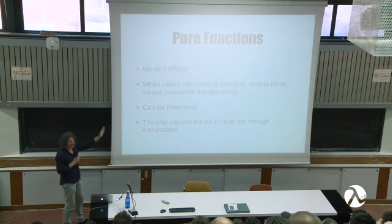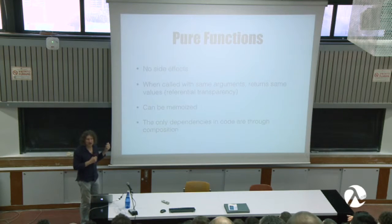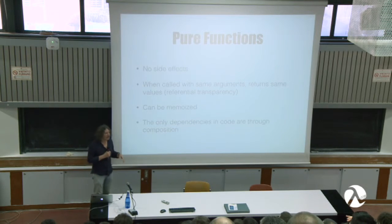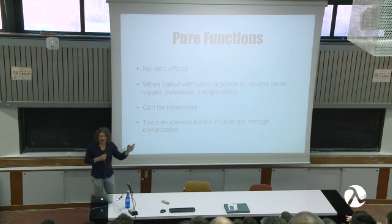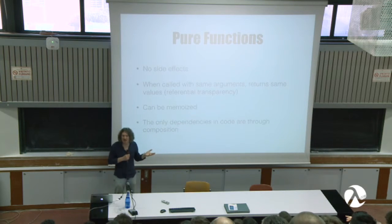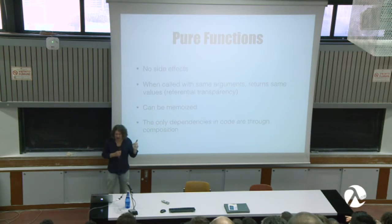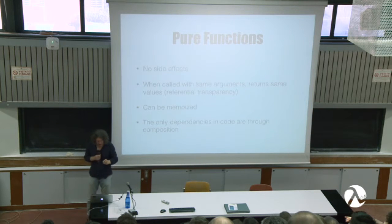A quick summary of what a pure function is: it cannot have any side effects. When called with the same arguments, it will always return the same values — that's called referential transparency. Because of that it can be memoized. If you have a function that takes a long time to evaluate, you can just remember the value and next time it's called, you just look it up. Because of referential transparency, it will always return the same value, so you don't have to calculate it a second or third time.